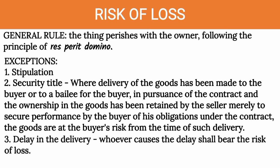Nevertheless, there are three exceptions provided by law to the res perit domino doctrine. Number one is stipulation. In other words, if the parties agreed prior to delivery that even prior to delivery the goods are already at the risk of the buyer, that is valid. Or even after delivery, the goods are still at the risk of loss of the seller — that is also valid as an exception to the res perit domino doctrine.